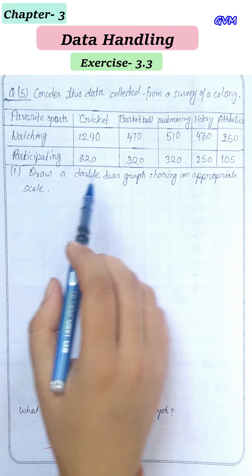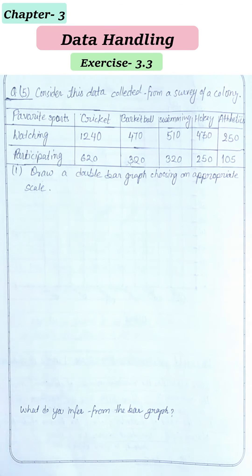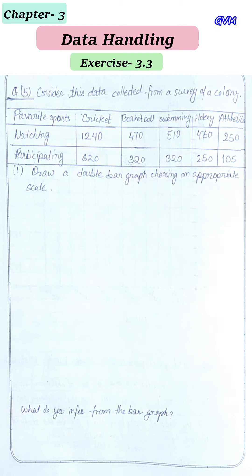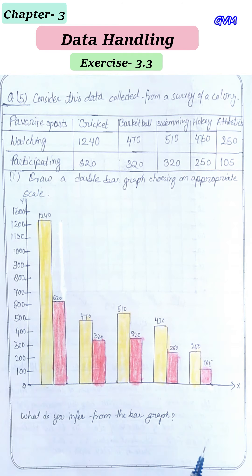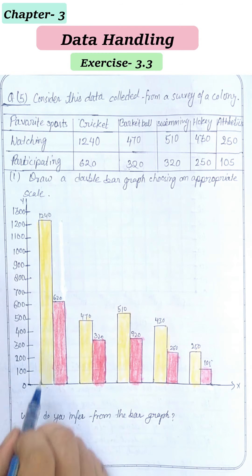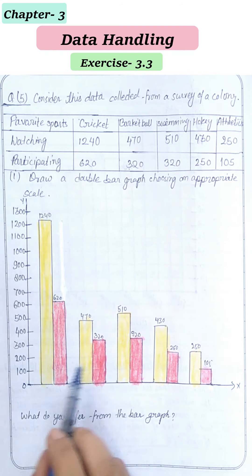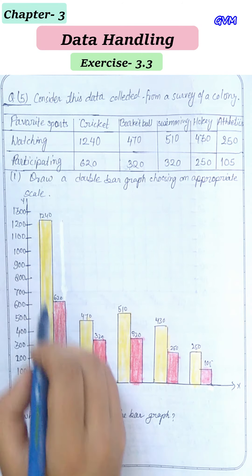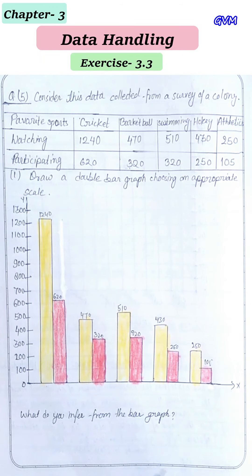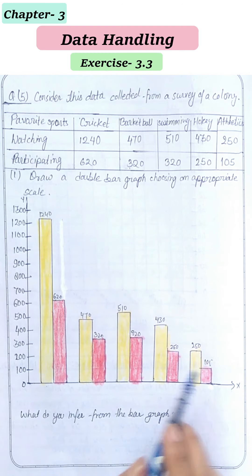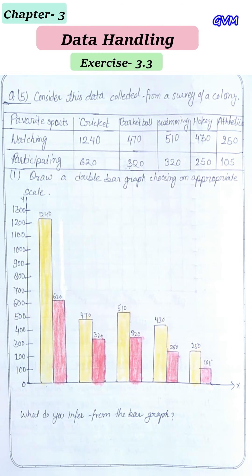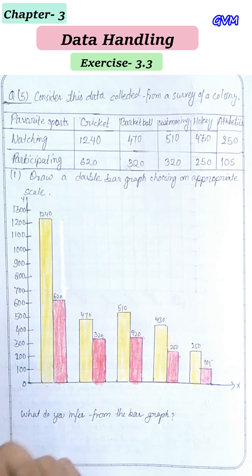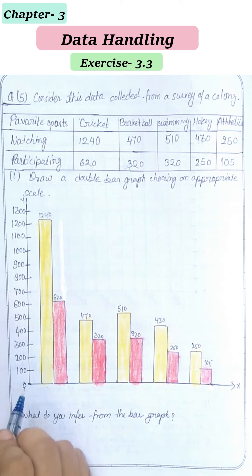The first question asks us to draw a double bar graph with an appropriate scale. Here is the double bar graph for this data. The yellow bar on the left shows the people who like to watch these sports, and the red bar shows the people who like to participate. I have taken a scale of one unit equals 100 people, and the y-axis goes up to 1300 to accommodate the maximum value of 1240.